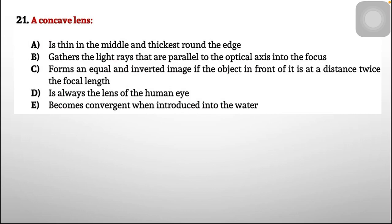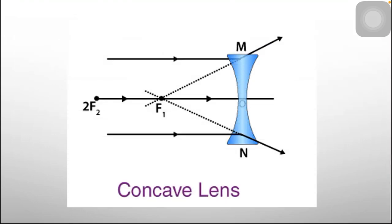Question 21: a concave lens. Option A says it is thin in the middle and thickest round the edge. Option B says it gathers light rays parallel to the optical axis into the focus. Option C says it forms an equal and inverted image if the object is at twice the focal length. A concave lens is actually thin in the middle and thick round the edges, so option A is correct.